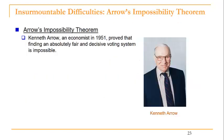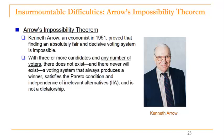There's something called Arrow's Impossibility Theorem. Kenneth Arrow was an economist who in 1951 proved that finding an absolutely fair and decisive voting system is impossible. With three or more candidates and any number of voters, there does not exist, and there never will exist, a voting system that always produces a winner, satisfies the Pareto condition and the independence of irrelevant alternatives, and is not a dictatorship.